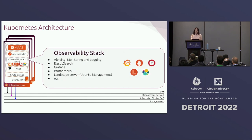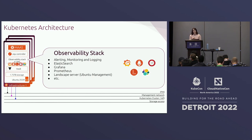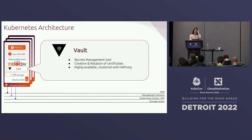In terms of observability, it's pretty standard. We're using open source projects: Elasticsearch, Grafana, and Prometheus. Since the whole deployment is done on Ubuntu servers, we're also using the Landscape server, which lets you see if you have security vulnerabilities in your environment depending on the version of packages you're using. For secrets management in Kubernetes, we're using Vault. Since it's deployed on those three infrastructure nodes, it's also HA, and we're using HAProxy in front of it.